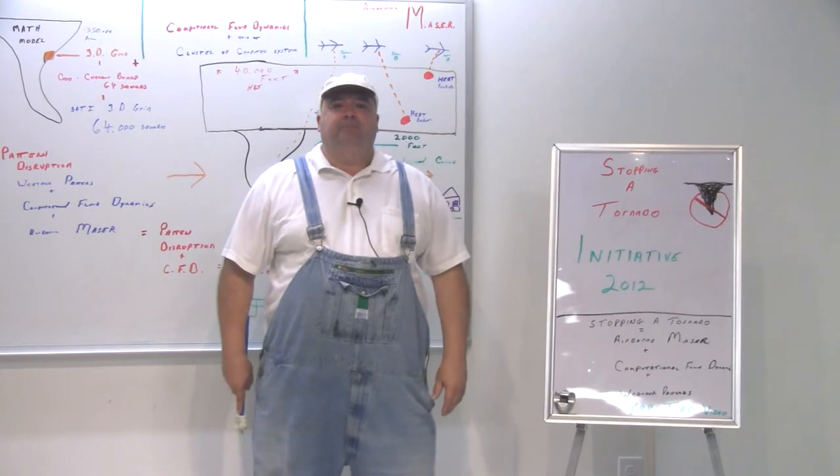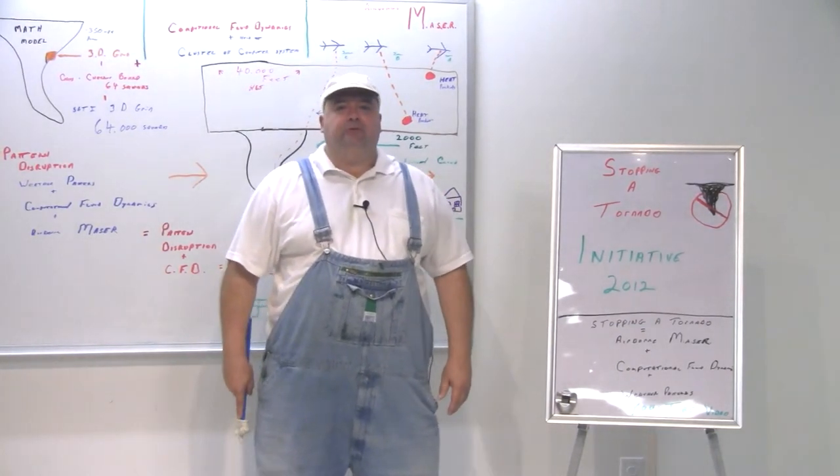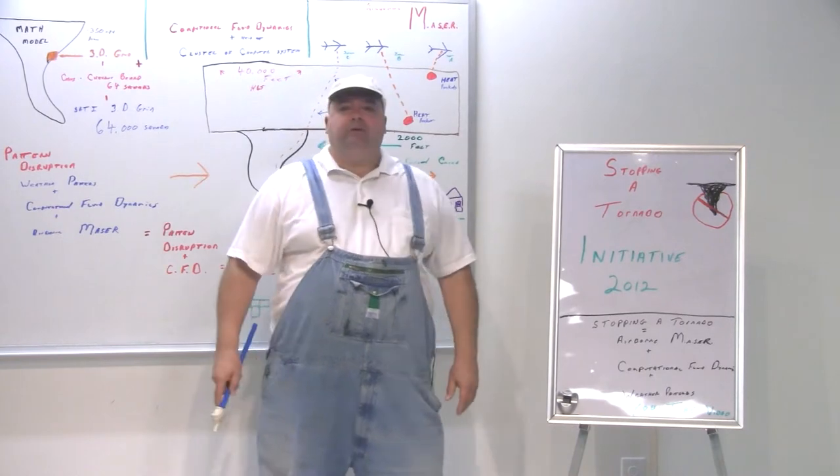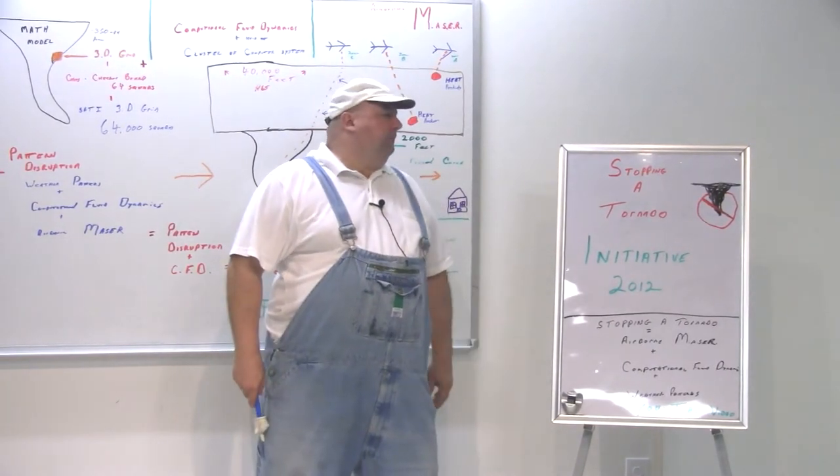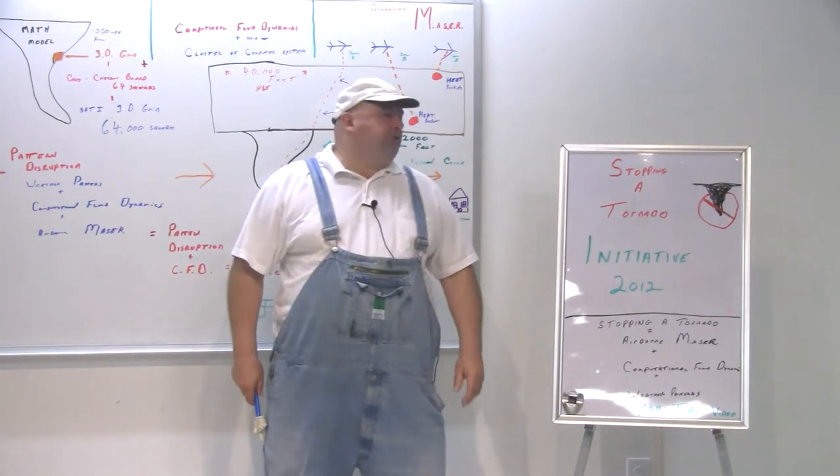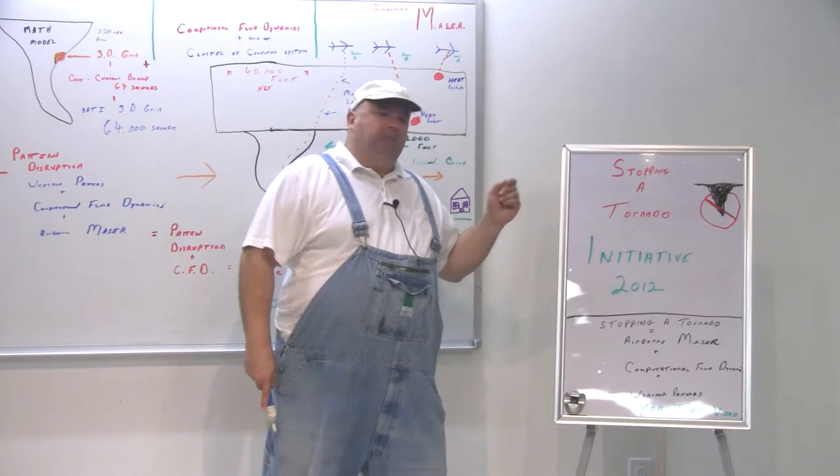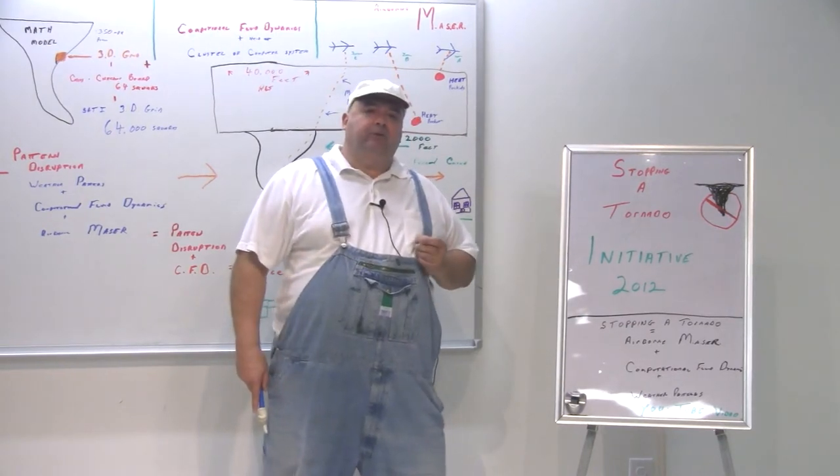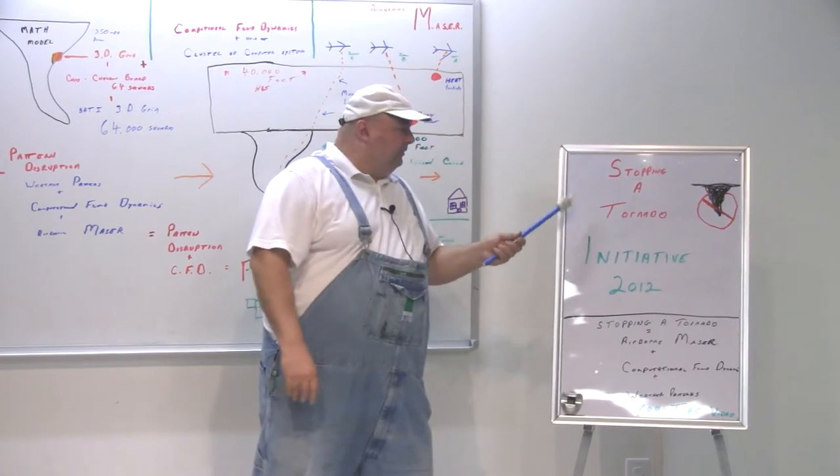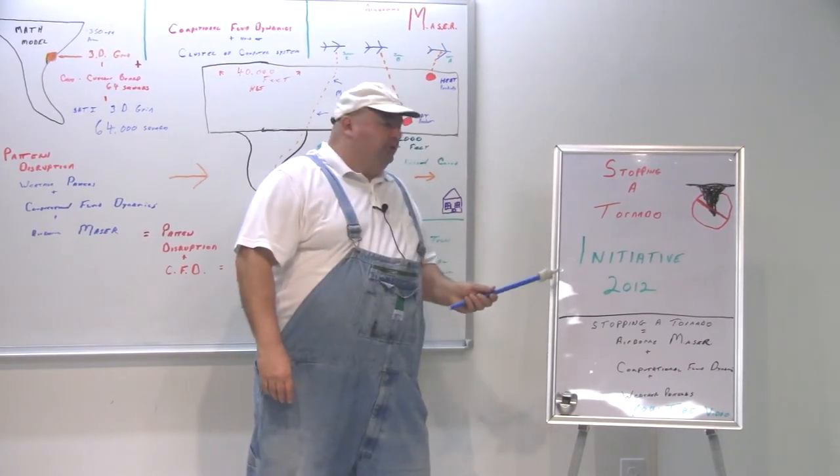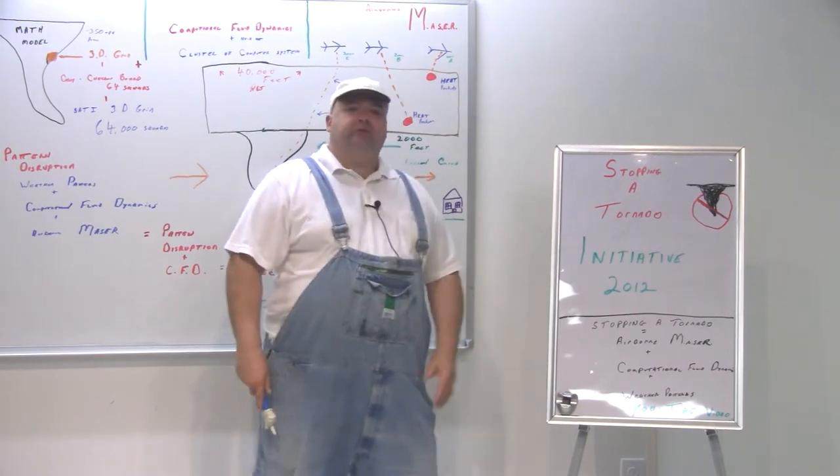Hi, I'm Chuck Mangino from Tallahoma, Tennessee. Today is April 7th, 2012. We're here at the Hands-On Science Center in Tallahoma, Tennessee, and I'm going to give my explanation at the very start of a program that I've got based on a theory that I came up with back in 2006. It's Stopping a Tornado Initiative 2012, as of the day the initiative starts.